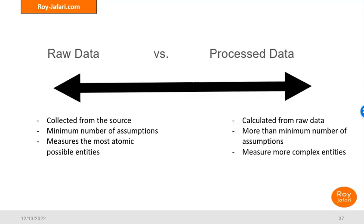In this example, most of the data we have are raw. An example of processed data would be if we calculate the debt-to-income ratio for our customers — we check the credit scores and calculate their debt-to-income ratio. That is a calculation: we grab the debt, we grab the income, and we calculate that. It's a very important metric for how risky someone is in terms of their financial health. We're using raw data, adding some assumptions, and creating a new, more complex measure — that's processed data.